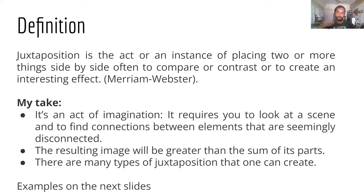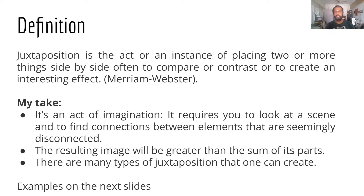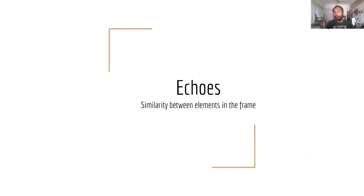Basically, you have one element here, one element there — connect them and you create something a little more magical. There are many different types of juxtapositions that one can create. I'll show you a few examples in the next few slides. One type of juxtaposition is echoes — similarities between different elements in the frame. Here are a few examples.